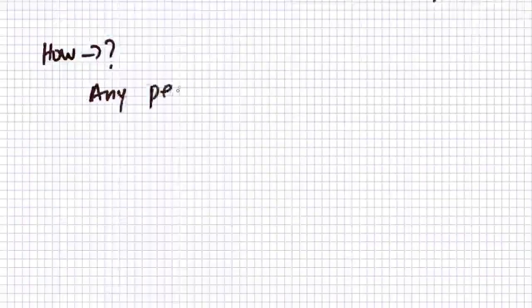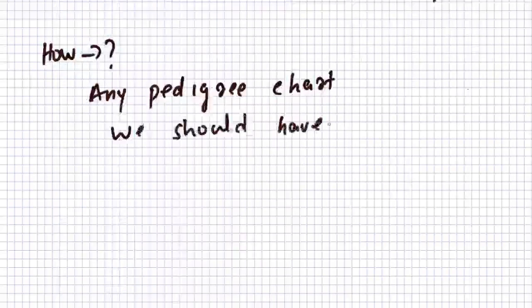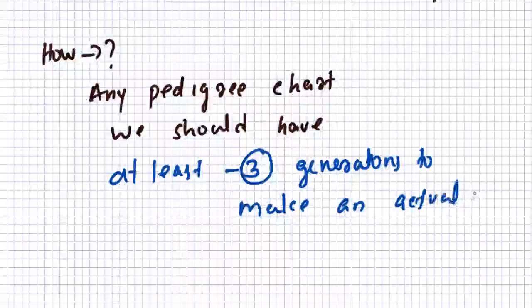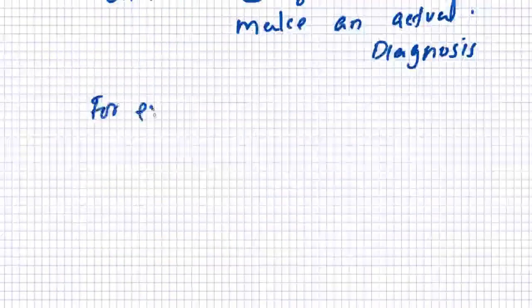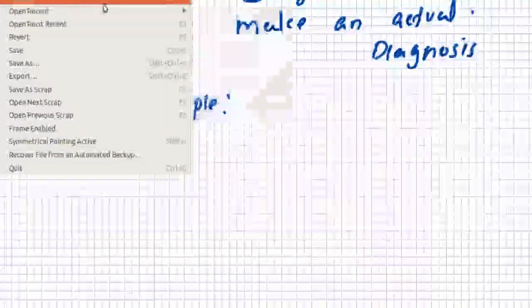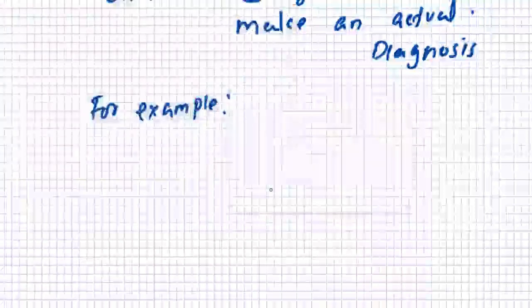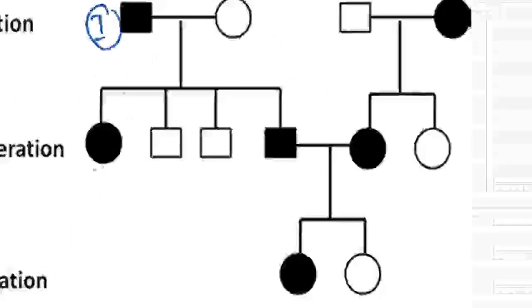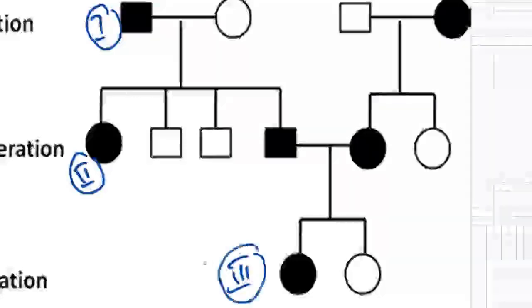For any pedigree chart, we should have at least three generations to make an ideal or actual diagnosis. I'll be showing you one pedigree chart here. It will be having three generations — I'll be marking it as first generation, second generation, and third generation.